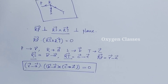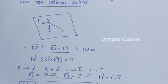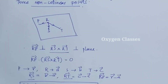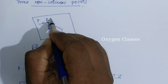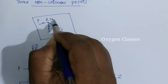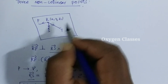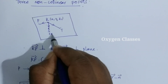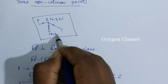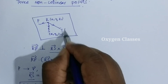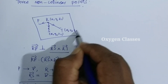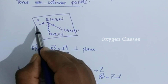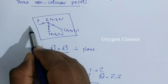Now we convert this to Cartesian form. We take the coordinates: R as (x1, y1, z1), S as (x2, y2, z2), T as (x3, y3, z3), and P as the general point (x, y, z).